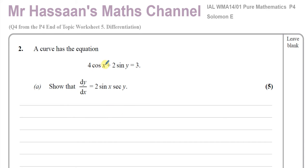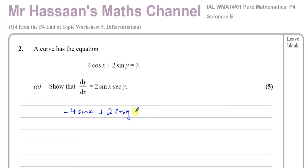I'm going to differentiate the first term with respect to x — the differential of 4cos(x) is negative 4sin(x), since when you differentiate cos(x) you get negative sin(x). Then I'm going to differentiate 2sin(y) with respect to x. This is in terms of the variable y, so I differentiate as normal — the differential of sine of something becomes the cosine of the same thing — but then I use the chain rule and multiply by the differential of what's inside the function, which is y.